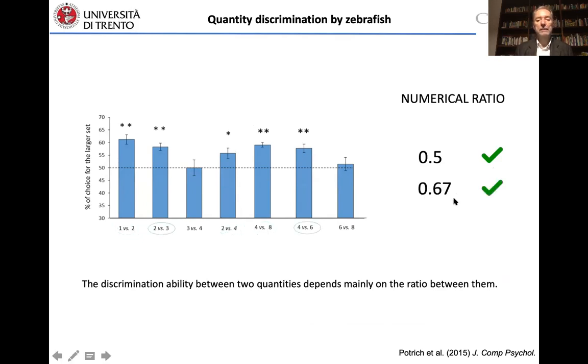And the same is true also when the ratio is 0.67, for instance two versus three and four versus six. They fail when the ratio is closer to one, so 0.75, three versus four and six versus eight. So you can observe basically that quantity discrimination in zebrafish seems to be based on the approximate number system. It doesn't depend on the use of small or large numerosities but just on the ratio between numerosities.